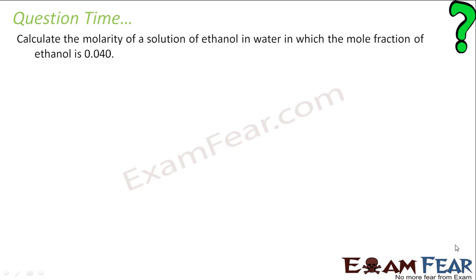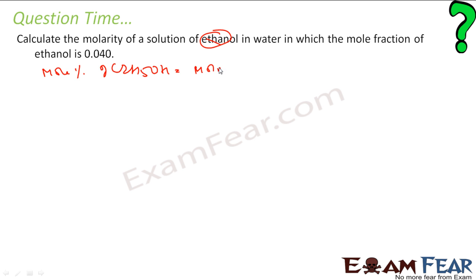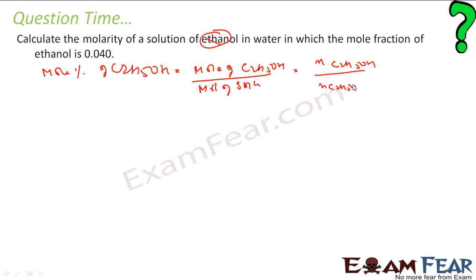Let us take one more question. We have to find the molarity of a solution of ethanol in water in which the mole fraction of ethanol is 0.04. We know that mole fraction of C2H5OH equals moles of C2H5OH divided by moles of C2H5OH plus moles of water, and that is given as 0.04.